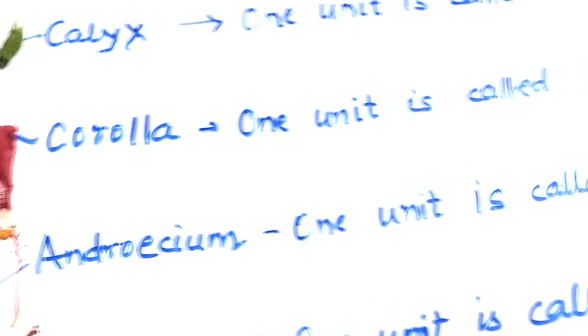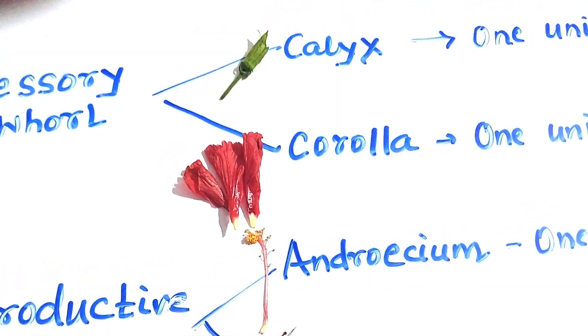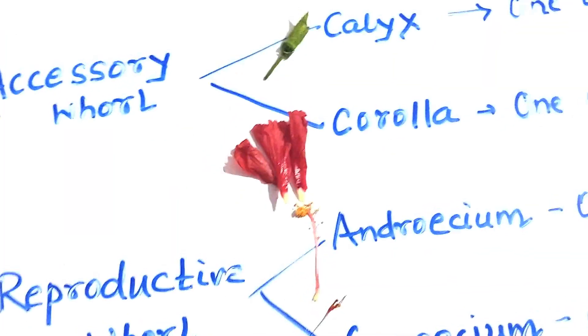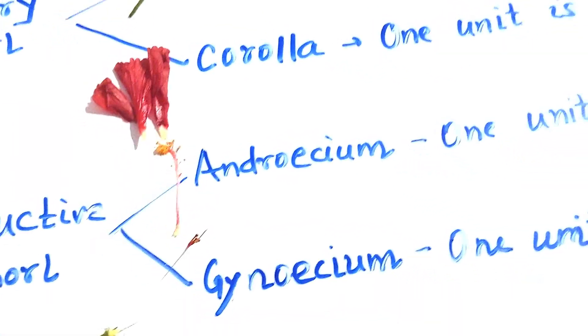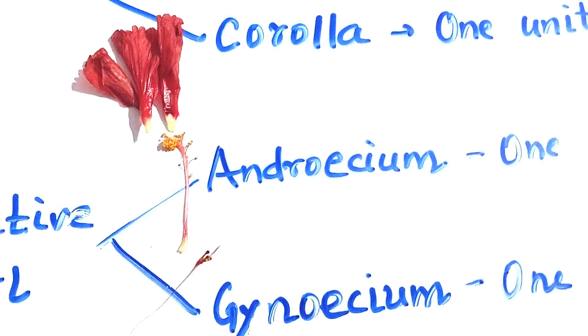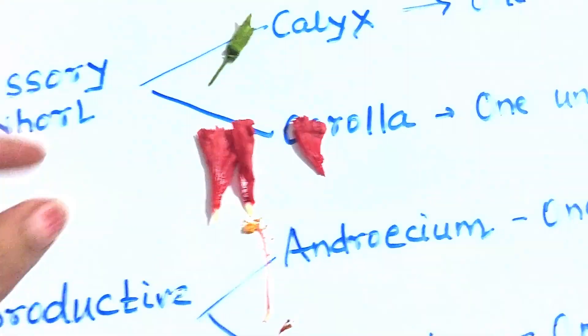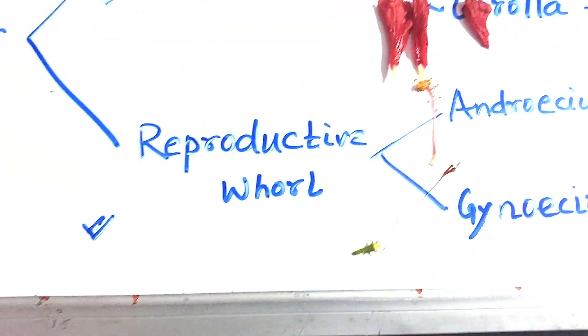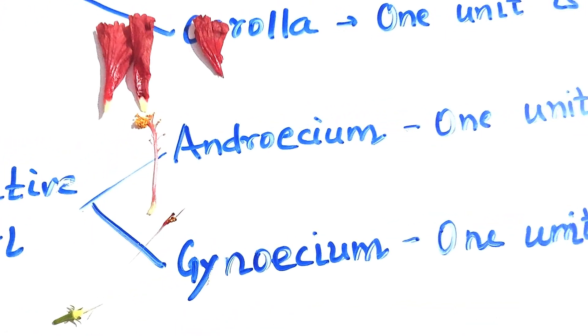The corolla, when you take one part in your hand, one unit is called a petal. This is called a petal. And this is the reproductive whorl called androecium and gynoecium.